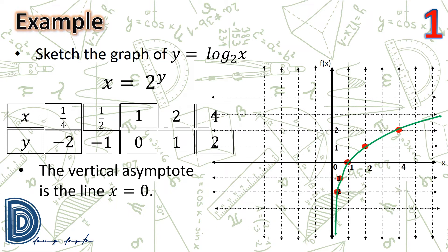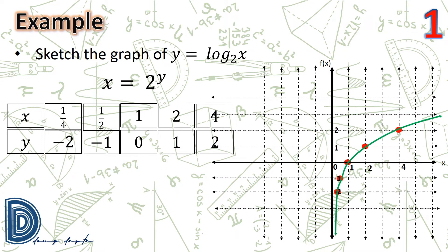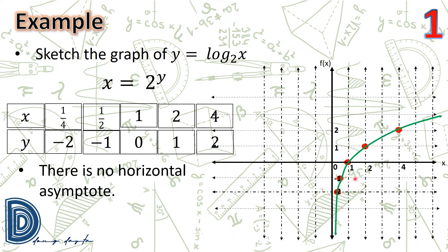The vertical asymptote is the line x = 0. Since there is no y-intercept and as x approaches 0 from the right the value of y decreases without bound, the line x = 0 (the y-axis) is the vertical asymptote. There is no horizontal asymptote since the range of the function is the set of all real numbers.